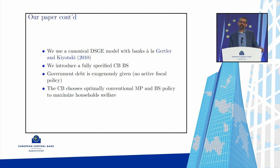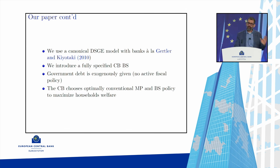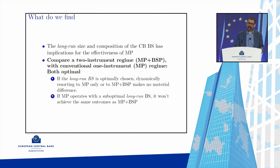The central bank chooses optimally both conventional monetary policy and the size of its balance sheet to maximize household welfare. We find that the long-run size and composition of the central bank balance sheet has implications for the effectiveness of monetary policy. The key interaction is between balance sheet policies and monetary policies, and this interaction is strong also in normal times.